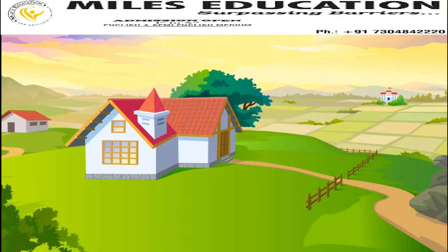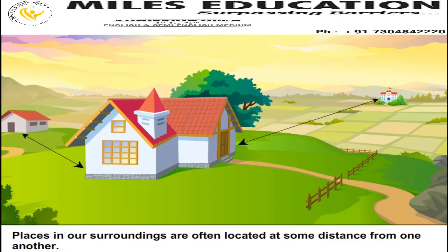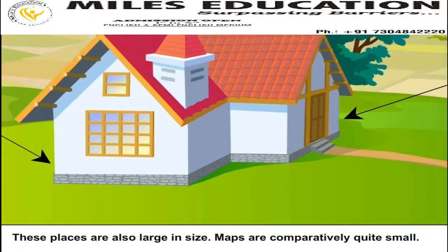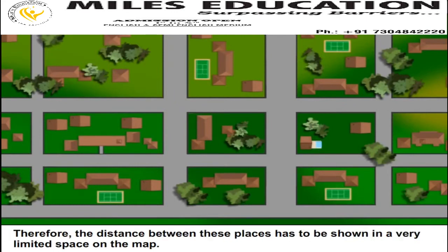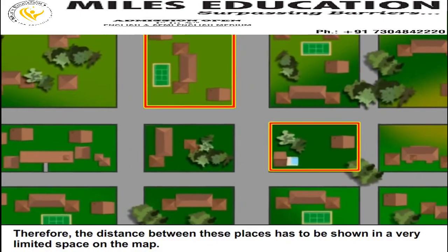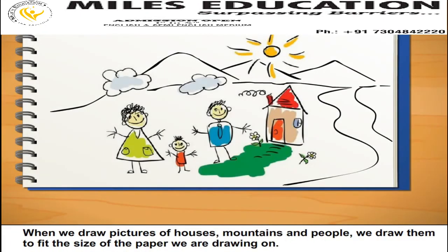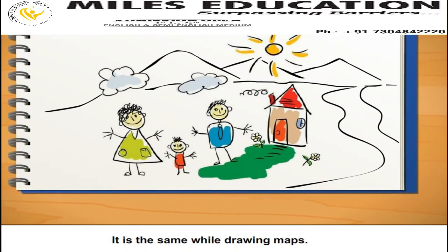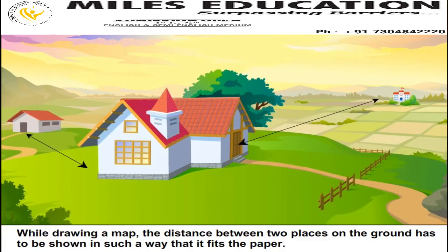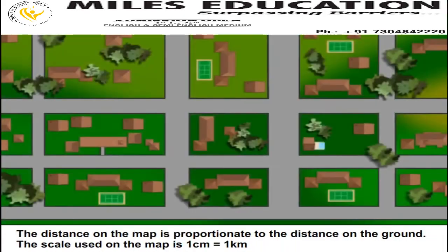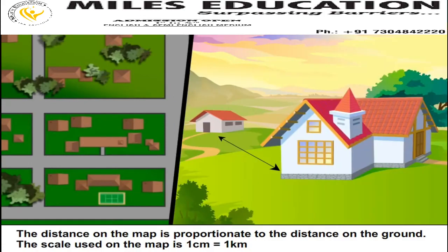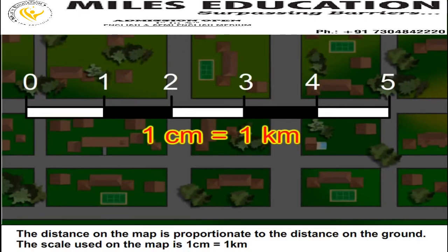Proportionate Nature of Maps. Places in our surroundings are often located at some distance from one another, and these places are also large in size. Maps are comparatively quite small. Therefore, the distance between places has to be shown in a very limited space on the map. While drawing a map, the distance between two places on the ground has to be shown in such a way that it fits the paper. The distance on the map is proportionate to the distance on the ground. The scale used on the map is 1 cm equals 1 km.